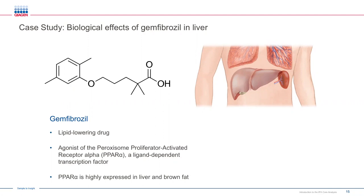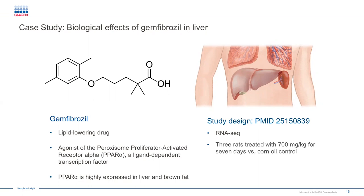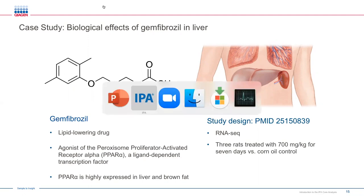PPAR-alpha is highly expressed in brown adipose tissue and in the liver, where it functions as a lipid sensor, leading to the metabolism of carbohydrates and fats as well as adipose tissue differentiation. The analysis comes from a study downloaded from GEO — RNA-seq data examining three different types of treatments including gemfibrozil. Rats were treated over seven days with 700 mg/kg and compared to rats fed corn oil.